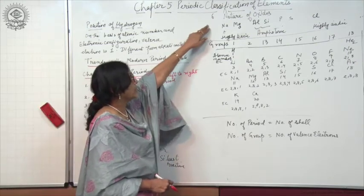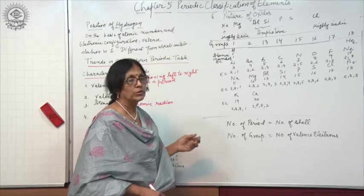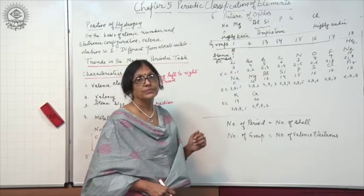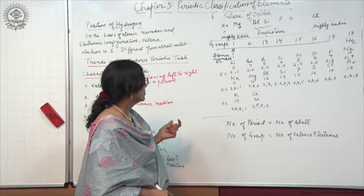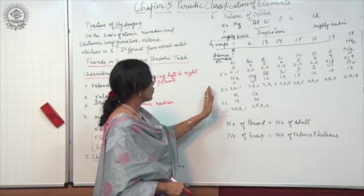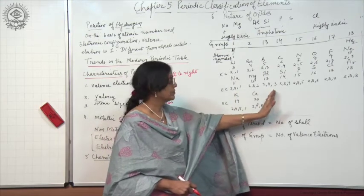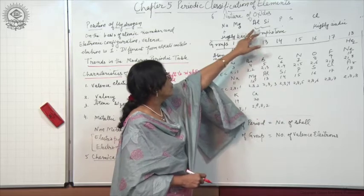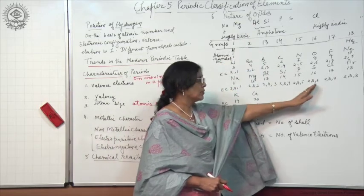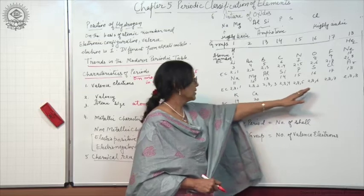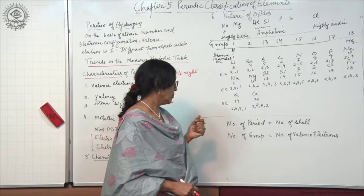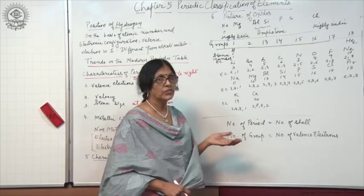Now let us see the nature of oxides. Metallic oxides are basic in nature and non-metallic oxides are acidic in nature. So on moving left to right in a period, the basic nature of oxides decreases, and in the centre we find amphoteric oxides which are neither basic nor acidic, and then the acidic character of the oxides increases. These are the characteristics of periods.